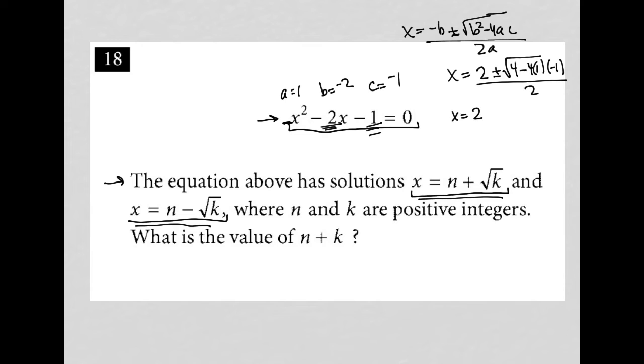Continuing, we have x equals 2 plus or minus the square root of—4 minus 4 times 1 times negative 1 is 4 plus 4, which is 8—all over 2.